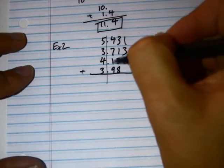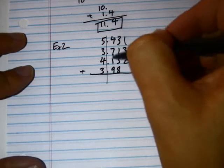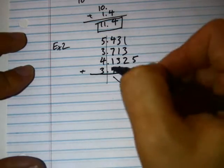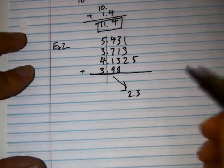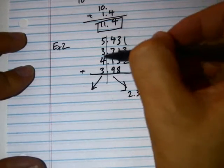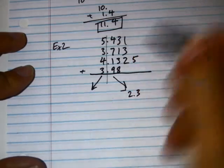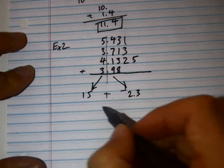So, 4 plus 7 plus 1 plus 9. Okay, 9 and 1 is 10. 7 and 4 is 13. 10 and 13 is 23. But since I'm adding up my tenths, I really have 2.3 over here. I'm going to add up my whole numbers. 5, 3, 4, and 3. 7 and 8, which is 15. So now I have 15 plus 2.3.